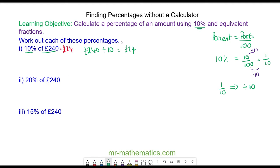You can use this to work out part 2: 20% of £240. Well, we know 10% is £24, and we want to work out 20%. We can double the 10% by multiplying by 2, and we do it to both sides to keep it balanced. 24 multiplied by 2 is 48, so 20% of £240 is £48.